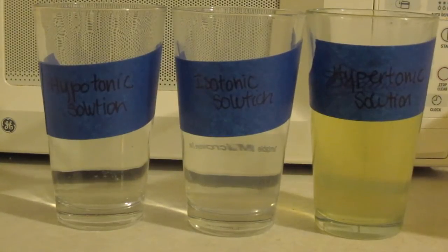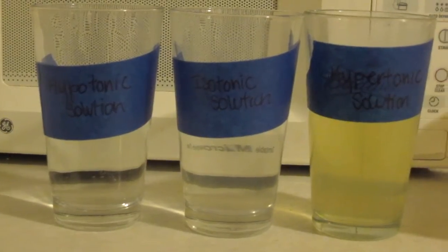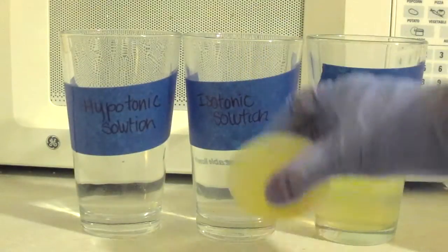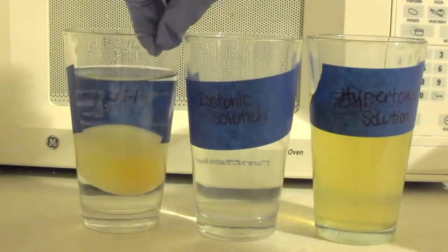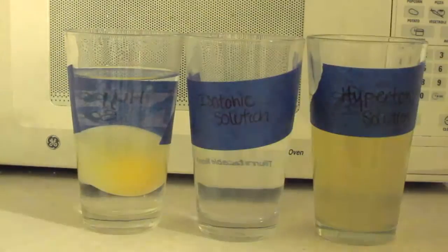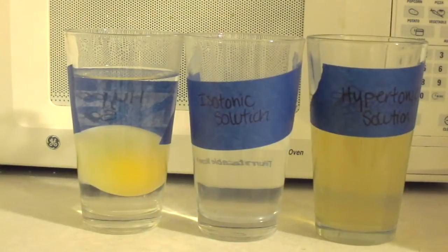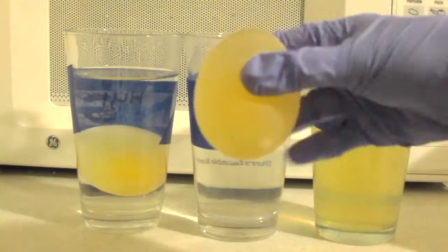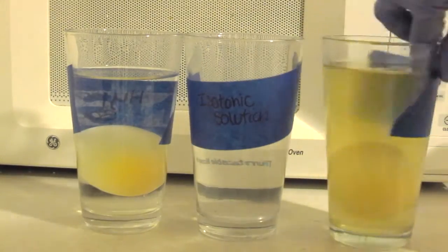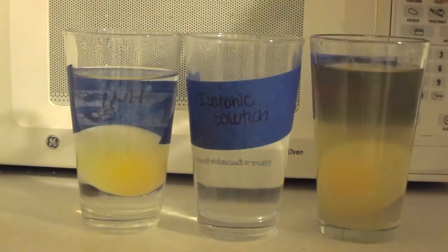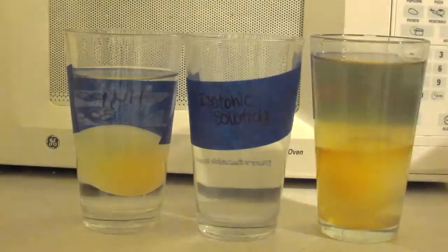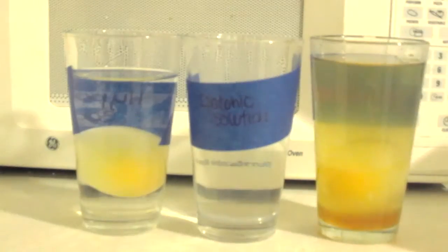Now that we got the shell off of our eggs, we're going to go ahead and put them in each solution. You'll notice that they're still a little bit puffy and they bounce a little bit, but there is water in vinegar to dilute it, so that's why they're a little bit puffy still. I'm going to go ahead and put one in the hypertonic solution and one in the hypotonic solution, and we're just going to go ahead and speed this up a lot so you can see the effects.